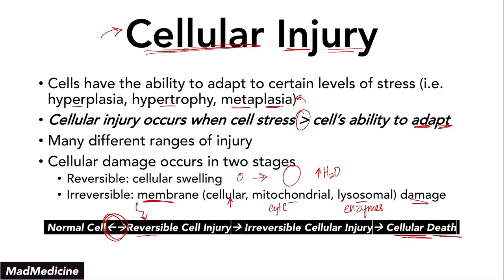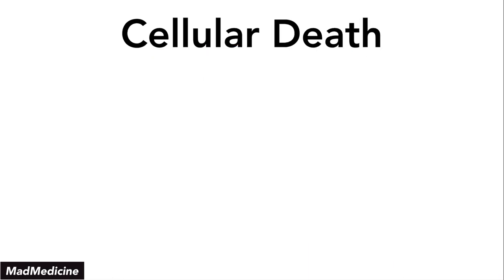Once you hit the irreversible cellular injury stage, our bodies have developed ways of killing off the cell, so cellular death at this stage is imminent. Now that we've discussed cellular injury as a quick recap, let's discuss our topic, which is cellular death. Cellular death is a very important concept because it's going to come up over and over again in the histology portion and in basic pathology and pathophysiology.